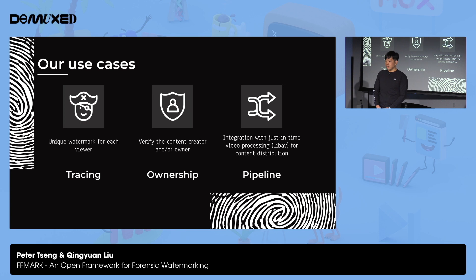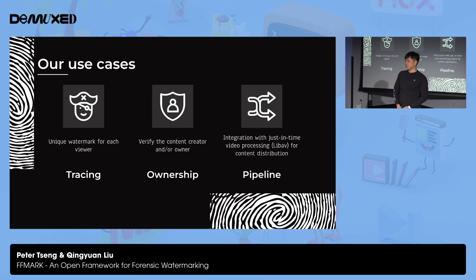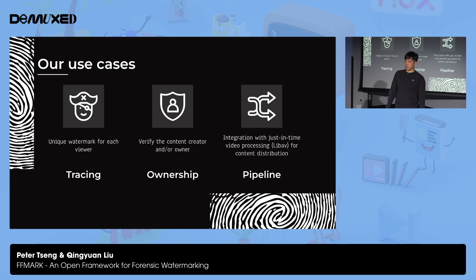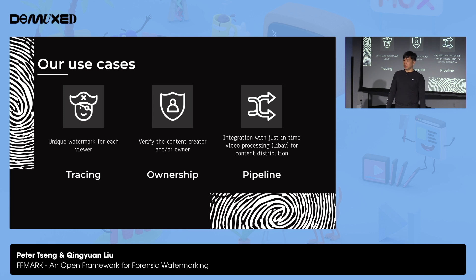So our use cases — what is forensic watermarking good for? The first thing is tracing; for example, finding the user that leaked pirated content. For this, you need to give each viewer a unique copy of the video with a unique watermark, which can be a scaling challenge. A naive approach might work for small audiences, like pre-release content. There are also techniques such as two-step A-B sequencing for further scaling. The next use case is to watermark content to prove the identity of the content creator or to establish ownership, which is useful for copyright infringement or authenticity verification.